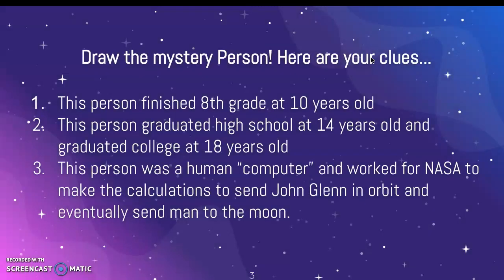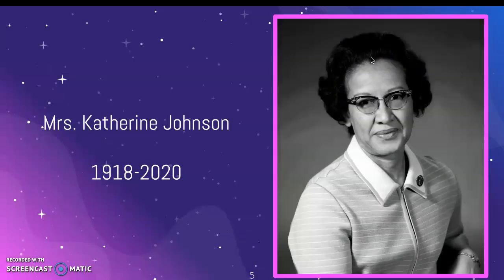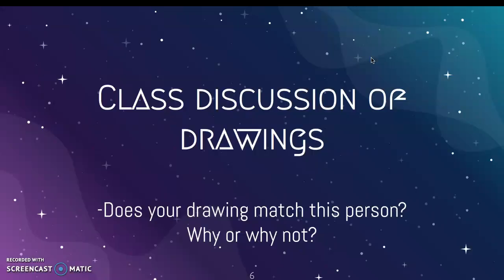When I show them the first part, I'm going to say draw the mystery person here — your clues are below. What I'm hoping will happen is that students will have some biases and draw a man, perhaps a white man, when thinking about NASA and science. Then we'll challenge those biases when I tell them the mystery person is Katherine Johnson. They'll have that introduction, then their drawings will be shared around the room and we'll talk about our own biases.